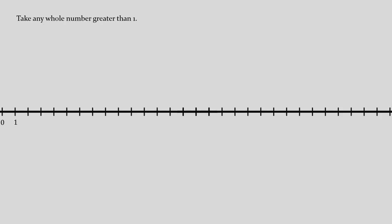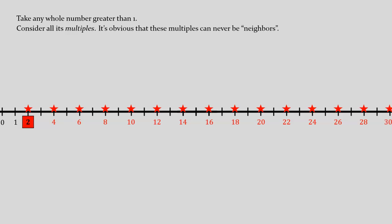As a preliminary matter, I want to make a simple but crucial observation about the number line. If we take any whole number greater than 1, I'll illustrate this by taking the number 2, and we then consider all its multiples. So, in the case of my illustration, that would be all the multiples of 2, i.e., all the even numbers. Then, it's obvious that these multiples can never be neighbors on the number line.